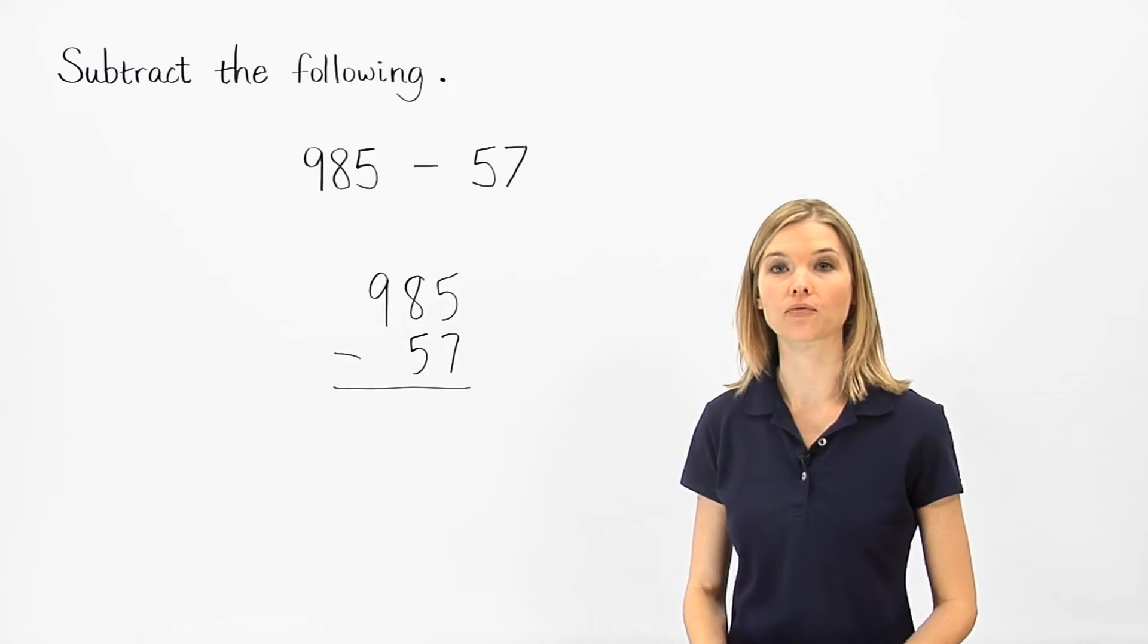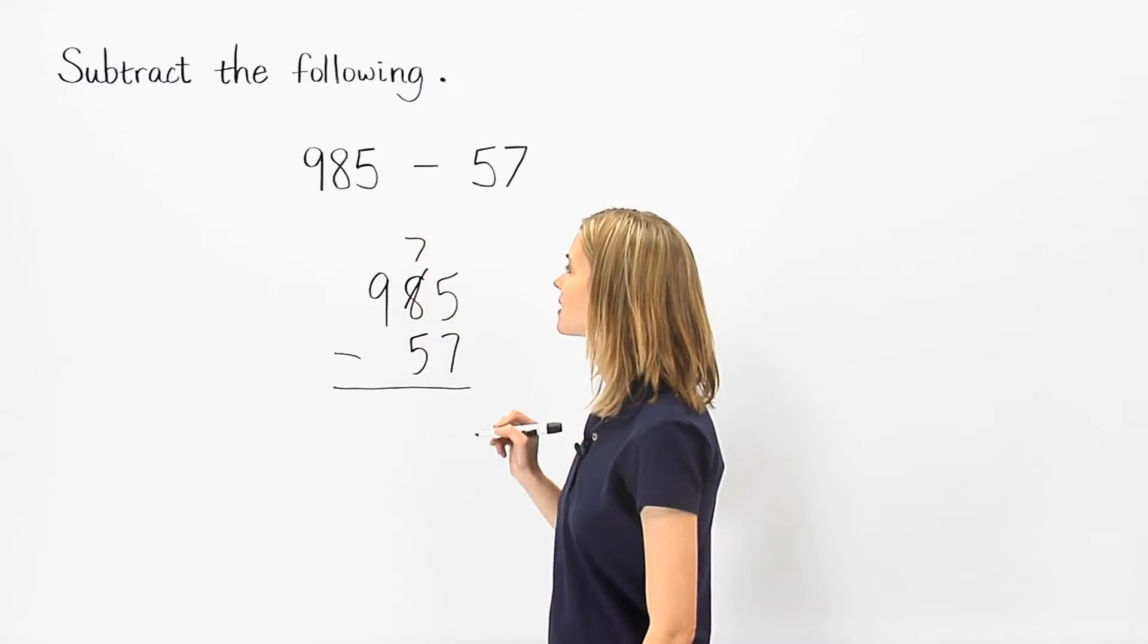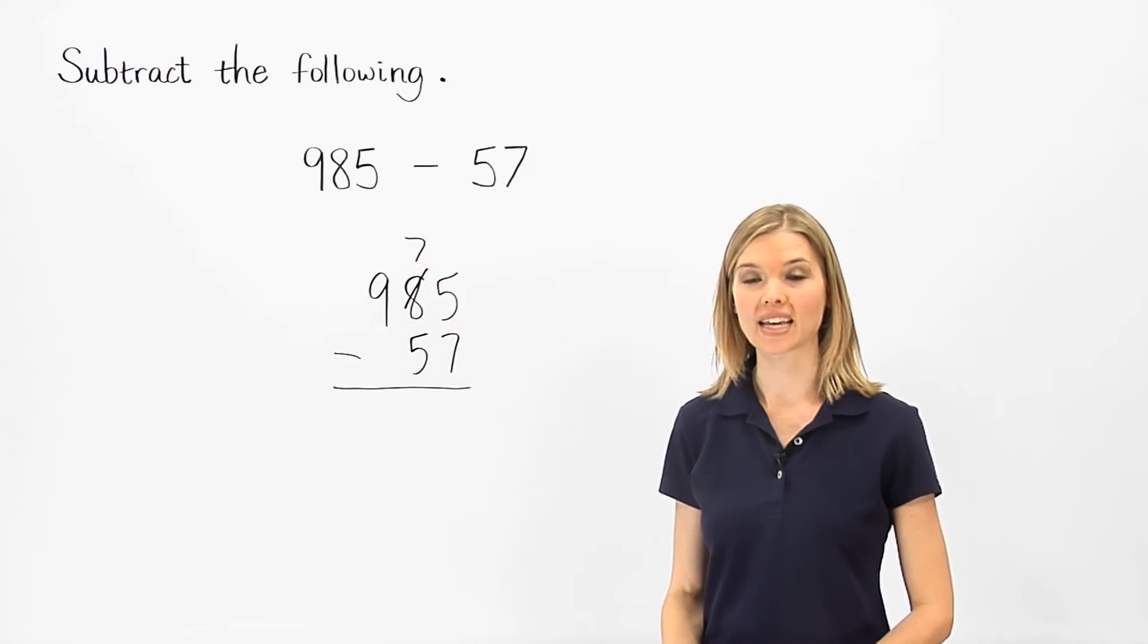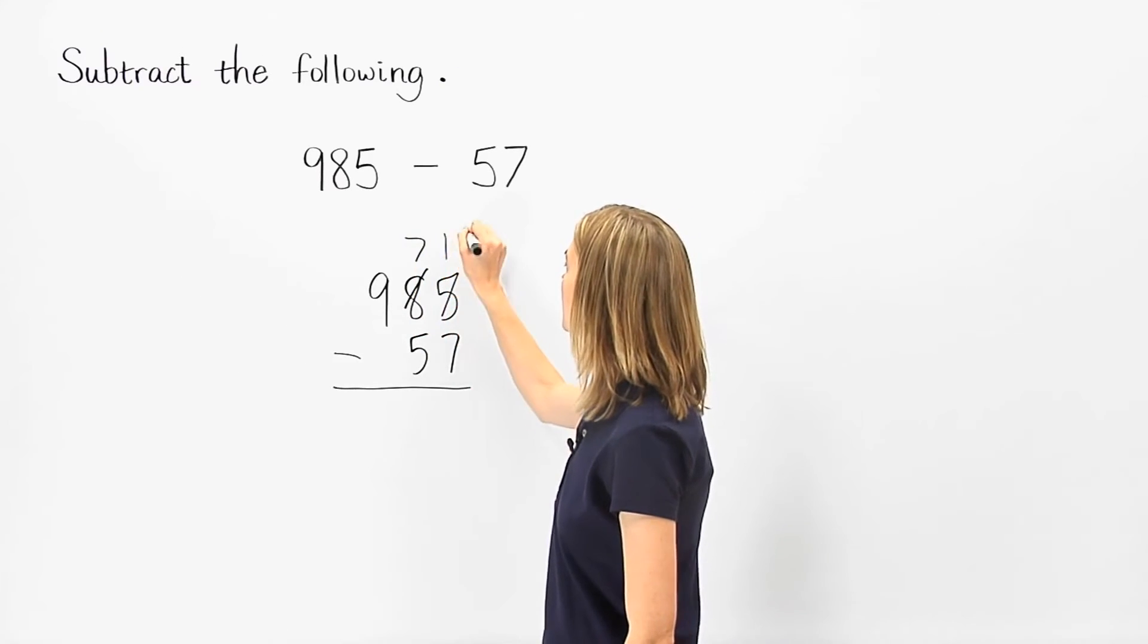we borrow one 10 from the tens column, leaving us with 7 tens. The borrowed 10 is then added to the 5 ones, giving us 15 ones.